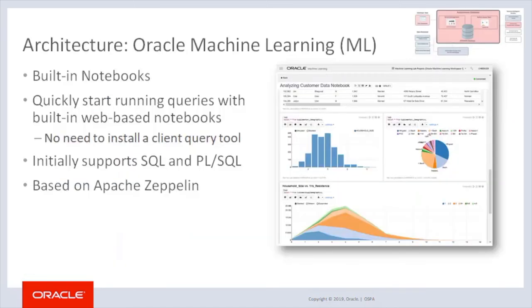As previously noted, an included component of the Autonomous Database service is Oracle Machine Learning (OML). OML is a web-based notebook environment based on Apache Zeppelin. With OML, users can quickly start running queries in an HTML environment without the need to install a client query tool. OML is Autonomous Database aware and makes it easy to leverage functionality such as resource services, machine learning algorithms in the database, SQL scripts, and graphical analytics tools that are part of OML. Notebooks can be saved and shared with other OML users, and OML provides an easy, integrated SQL and analytic development and runtime environment that can be accessed from anywhere, anytime.